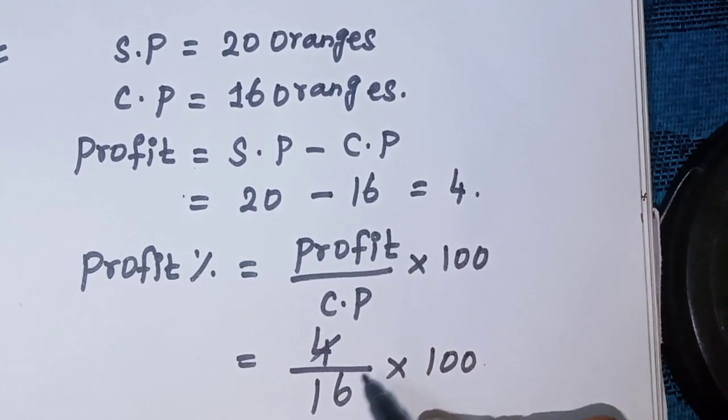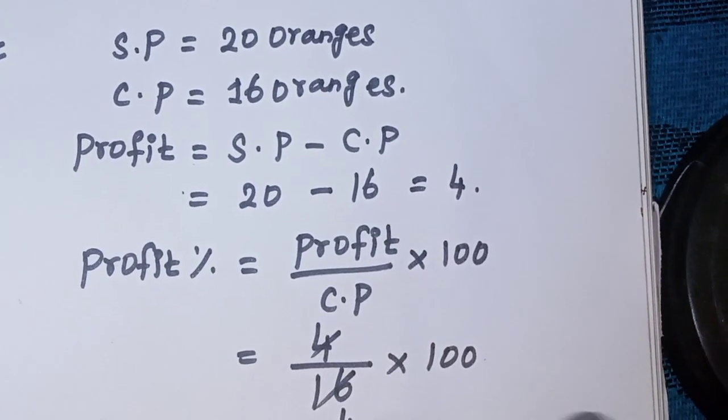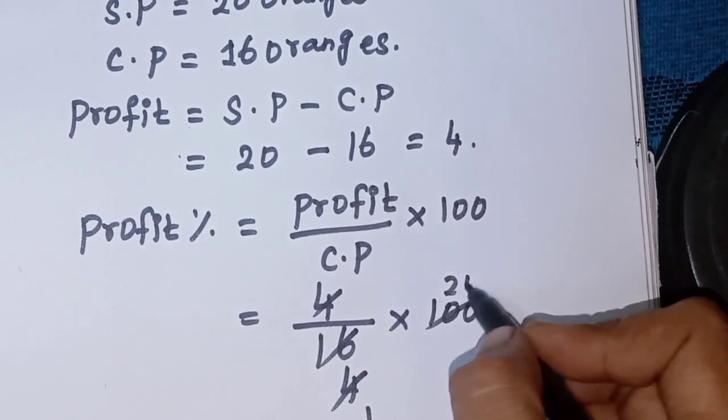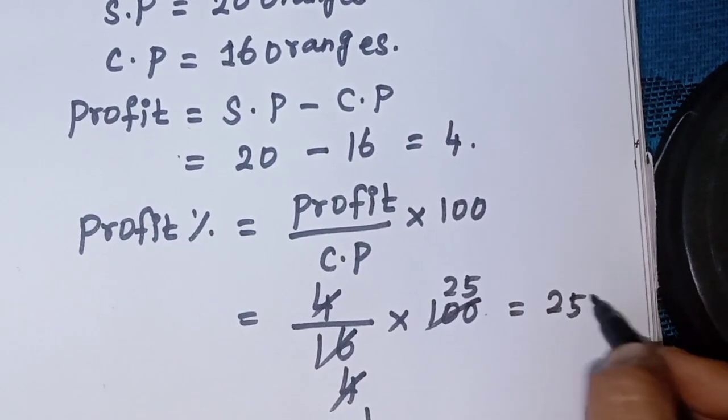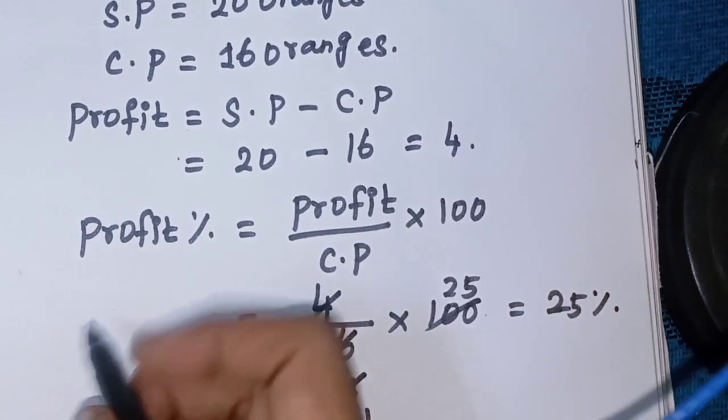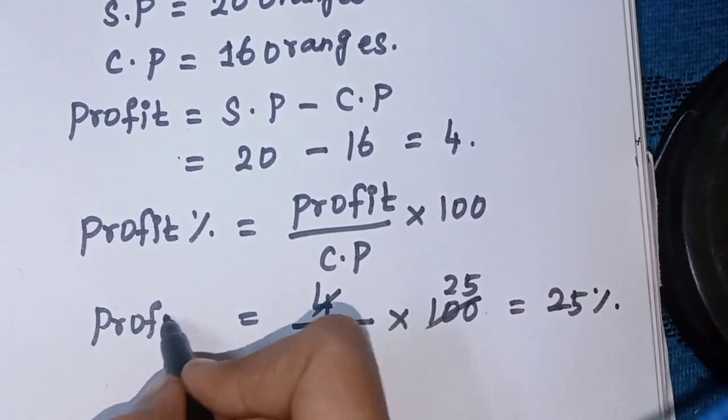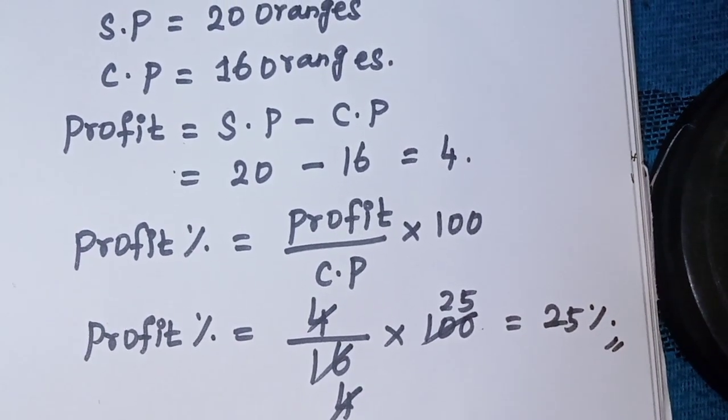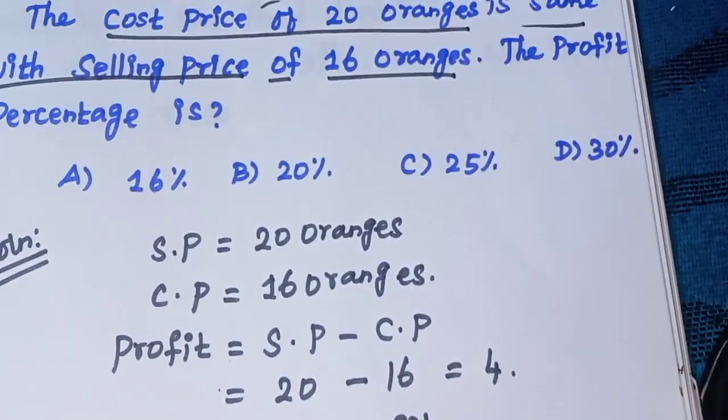4 cancels to 1, 16 cancels to 4. So 1 divided by 4, and 100 divided by 4 is 25. So 25%. Profit percentage equals 25%. This is the final answer. The answer is option